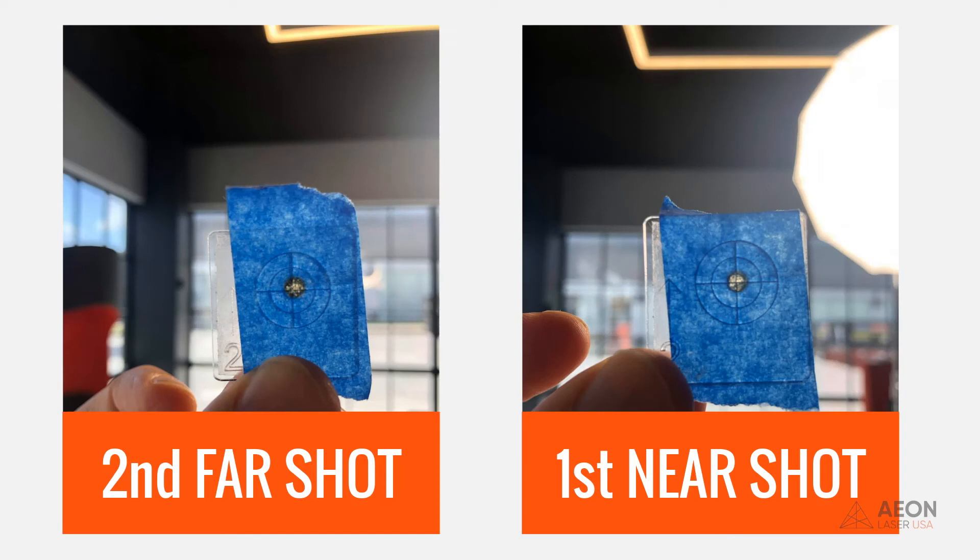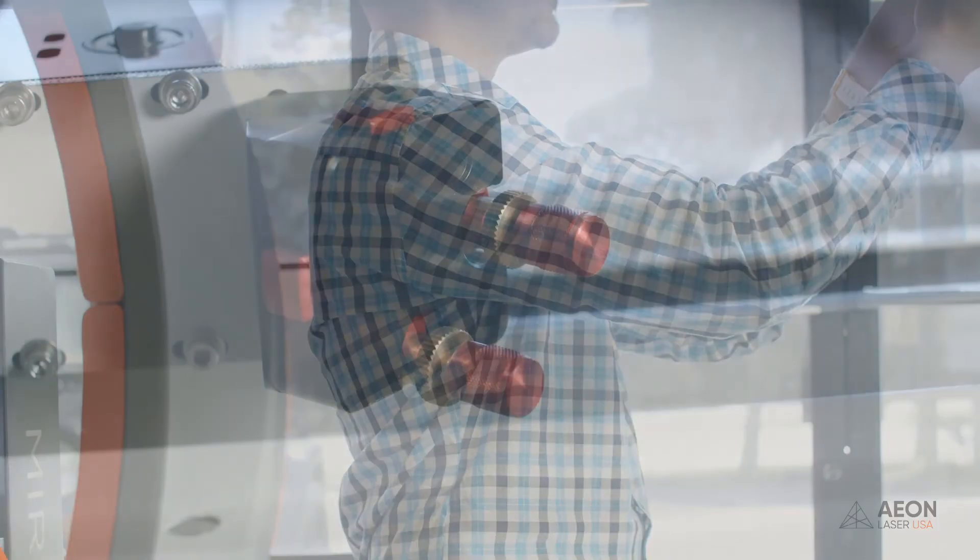Now while we're looking at this, we can also make sure that our beam path is relatively close to the center of the target. So that, again, is the second job we have here, is just to make sure that our beam path is running as close to that center mark as possible. It doesn't have to be perfect, but we want to go ahead and just take a picture just in case we need to talk to tech support about it.